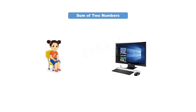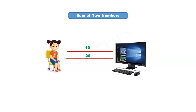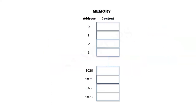Imagine that we need the computer to calculate the sum of two numbers. However, the computer does not know which numbers to add. Therefore, the first step is to input two numbers into the computer. Let us assume that the user inputs the values 10 and 20. These values are then stored in the computer's main memory or RAM. Memory can be visualized as a series of locations, each with a unique address that begins at 0.